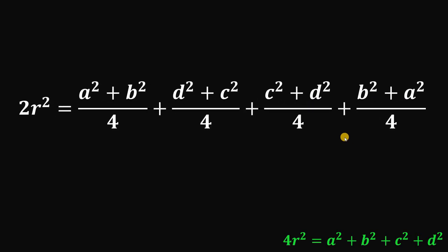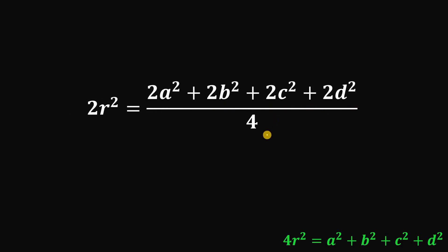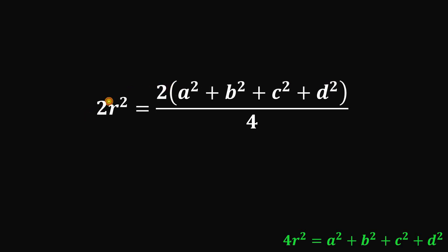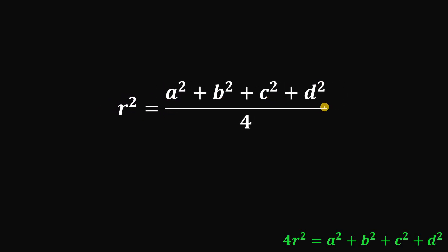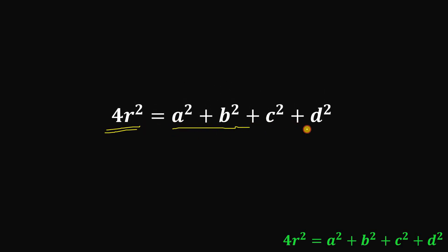What remains in the numerator is A squared plus B squared plus D squared plus C squared, each appearing twice: so 2A squared plus 2B squared plus 2C squared plus 2D squared, all over 4. Factoring out 2 from the numerator and dividing both sides by 2, we get R squared equals (A squared plus B squared plus C squared plus D squared) over 4. Finally, multiplying both sides by 4, we get 4R squared equals A squared plus B squared plus C squared plus D squared, which is the relationship we set out to prove.